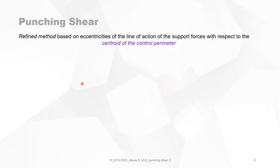When you do not fulfill those requirements, you have to use a refined method to calculate beta. When doing so, you need to calculate eccentricities of the force VED. This eccentricity is measured with respect to the center width of the control perimeter — not the center width of the support — which makes it rather difficult to calculate.